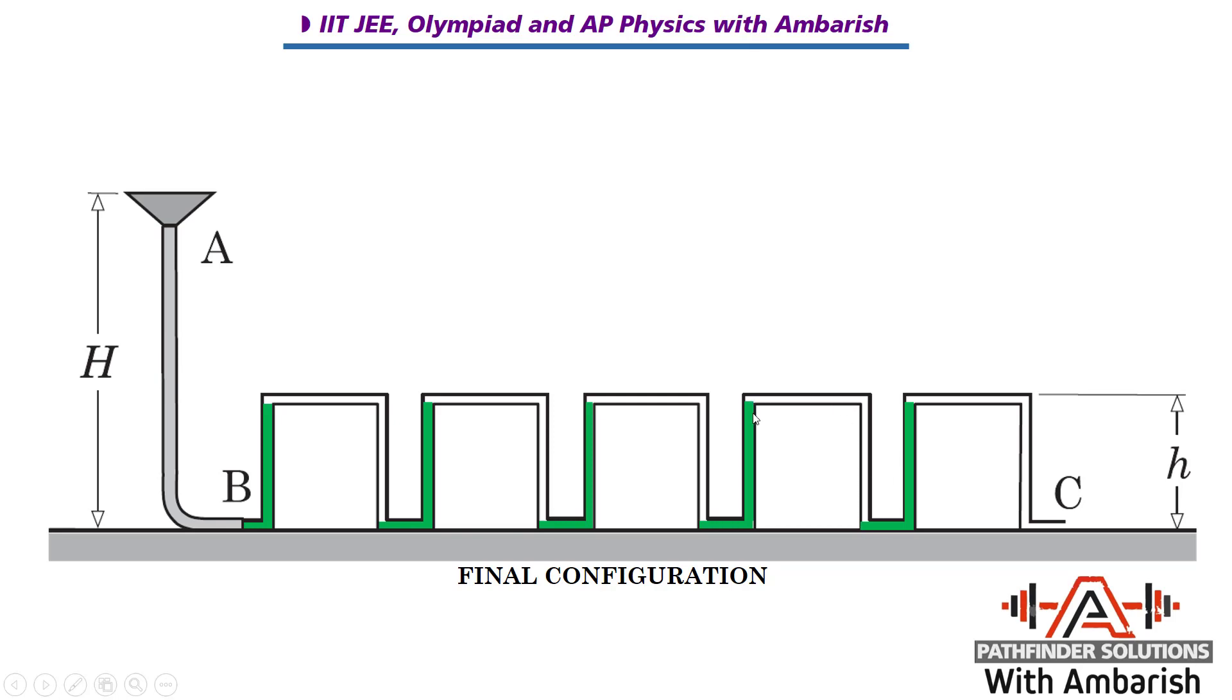And then again from here, you go down a depth H, so this becomes 2ρgh. And again 2ρgh continues. Again you fall through a depth H, so again another ρgh, that makes it 3ρgh. Then again 3ρgh continues, and this becomes 4ρgh. And again 4ρgh continues, and this becomes 5ρgh.